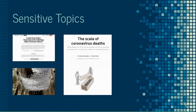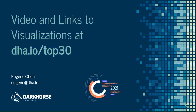I hope you've enjoyed the 25 visualizations so far. There are five more that are separate because they cover more sensitive issues such as suicide, rape, and different attempts at visualizing data on COVID deaths. You can find that video and this one, along with the links for the visualizations shown, at dha.io/top30. Thank you for going through this video — feel free to reach out if you have any questions. My email address is right here, and till the next one.